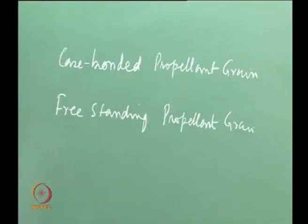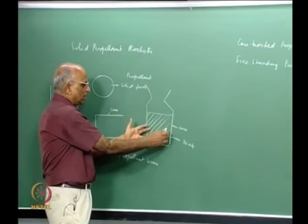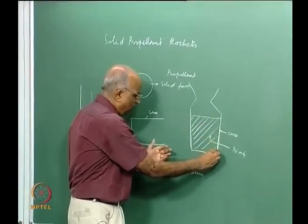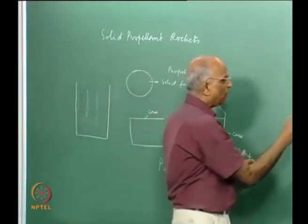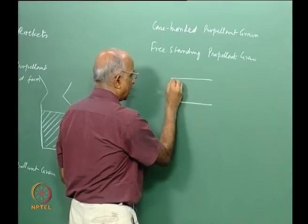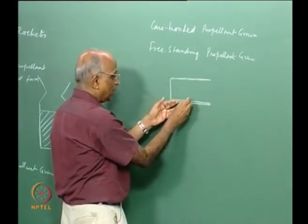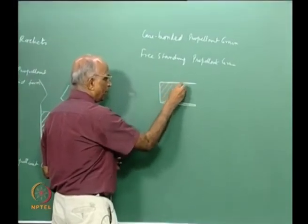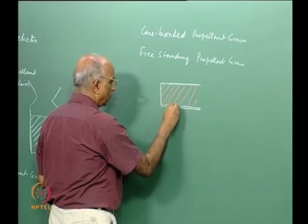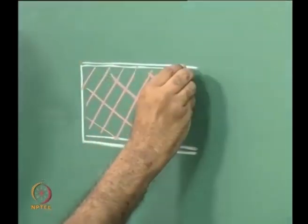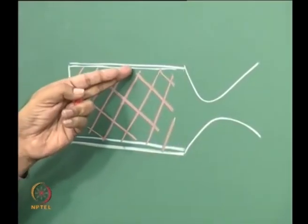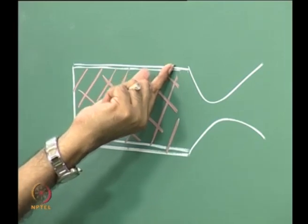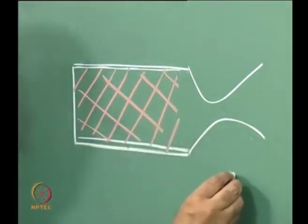We have both types being operational, but when we talk of large solid propellant rockets, we invariably cast the propellant in the case itself. As the propellant burns, the metal case will get heated. Therefore, it is necessary to have a liner — which could be an insulator — and then put the propellant into it. I have a case, an insulator to ensure that when something burns the hot gases do not melt the motor case, and then I have the nozzle. This is what constitutes the solid propellant rocket.